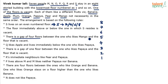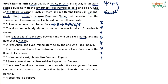There is a gap of 4 floors between the one who likes mango and the floor that is vacant. Pictorially, if this is mango, then there should be 1, 2, 3, 4 floors and then the vacant floor. These can be interchanged — it can be vacant-dot-dot-dot-dot-mango or mango-dot-dot-dot-dot-vacant. We can mark this as a resolved statement.